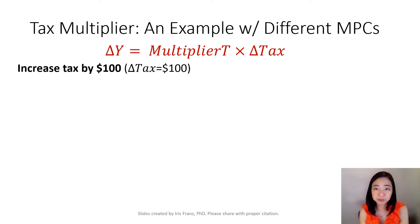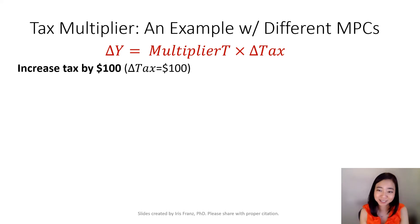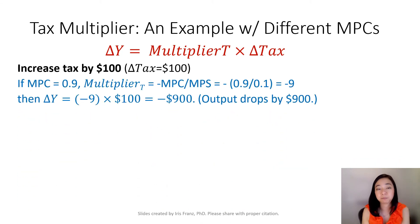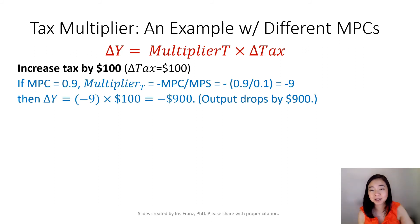Now let's look at how different MPC values change the effect of a tax on output. We know the change in output equals the tax multiplier times the change in tax. Suppose tax increases by $100. Poor people tend to have a higher MPC because they're more likely to spend their entire paycheck. With a higher MPC of 0.9, the tax multiplier equals negative 9, which means output goes down by $900.